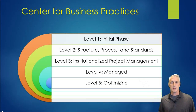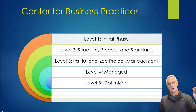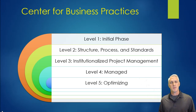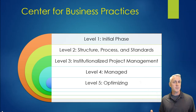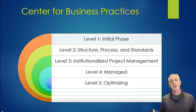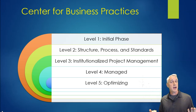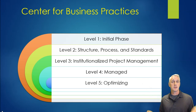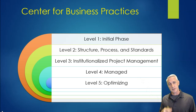Looking at these models, they all have pretty much five levels of best business practices. You could make a radar chart from one to five instead of zero to three, and then directly implement measures of these business practices across different skills.